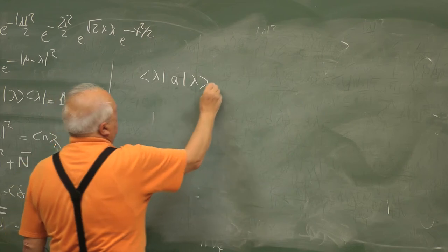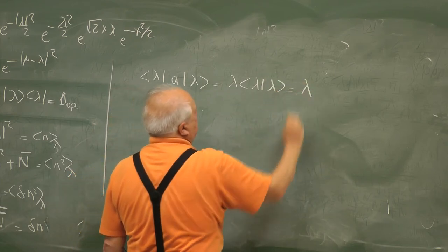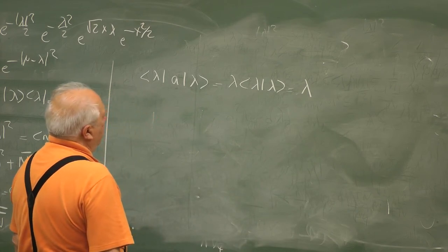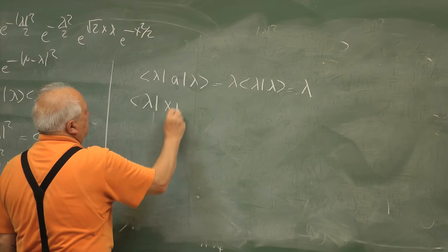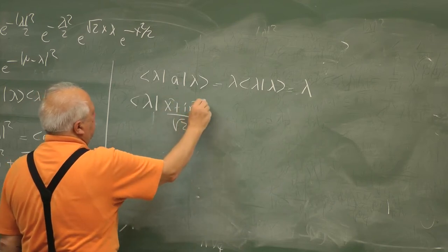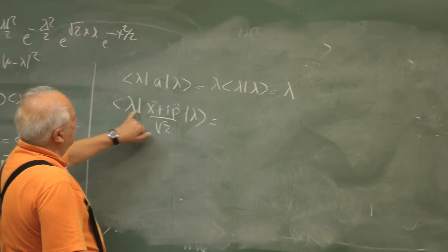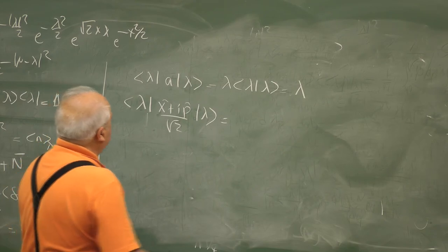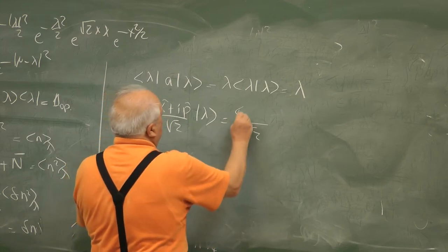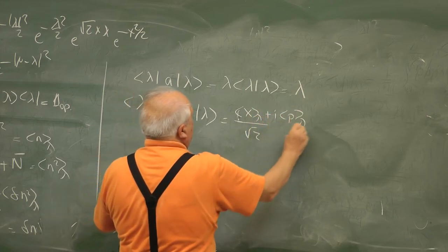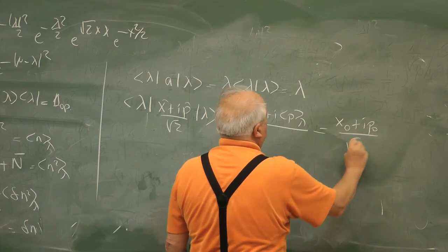Lambda, A|λ⟩ = λ|λ⟩. This is an eigenvector of A, therefore this gives simply λ. Now notice that this A operator is (X + iP)/√2. These are operators. So this is the expectation value of X in the state, or in the wave packet λ. So it is (1/√2) times ⟨X⟩_λ plus i⟨P⟩_λ, which I can call (X₀ + iP₀)/√2.